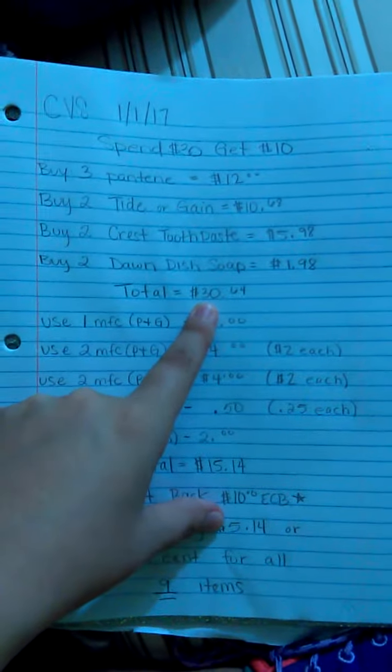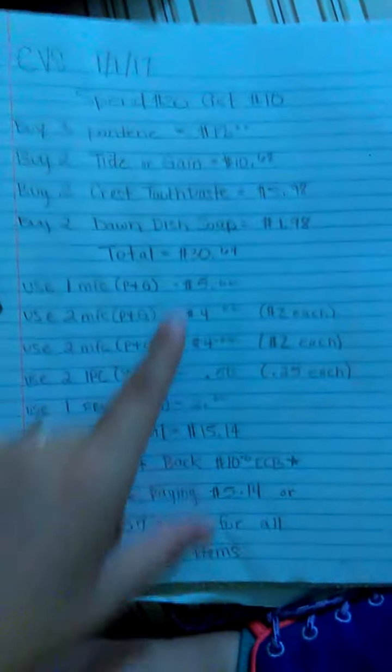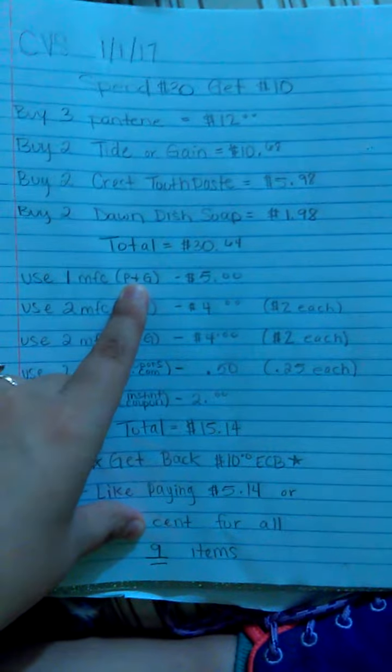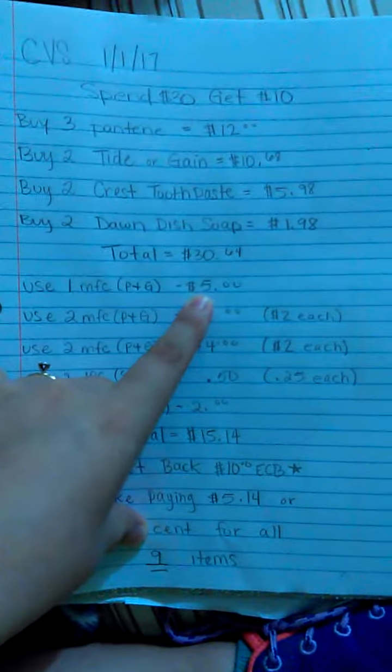Your total will hit $30.64 and then all the coupons are right here. You're going to use one manufacturer coupon from the P&G that just came out today. $5 off.